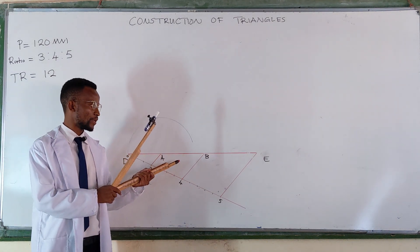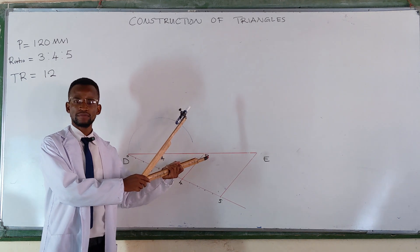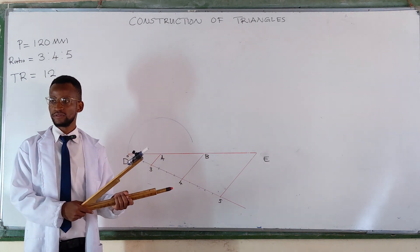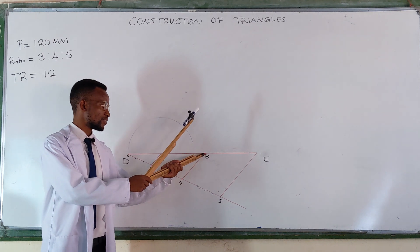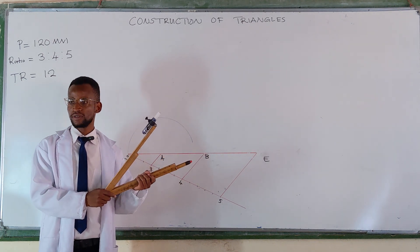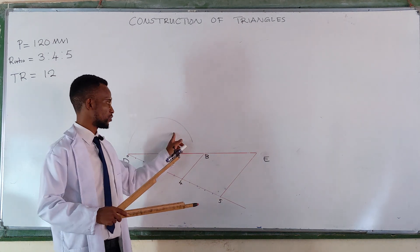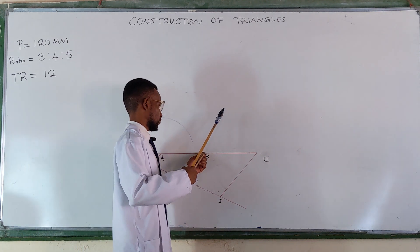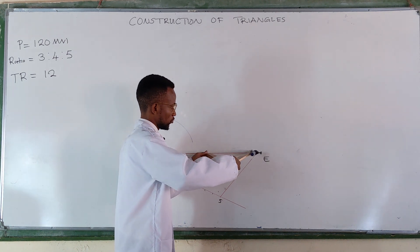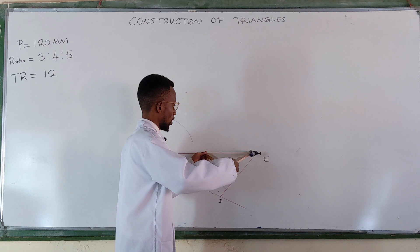The next step is place your compass at point B. Open it to E, meaning you get the distance B, E. And then you strike an arc to meet with this one. We're only interested in the point where the two arcs are meeting.